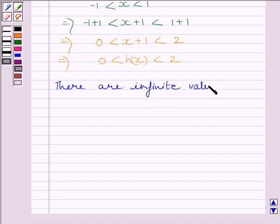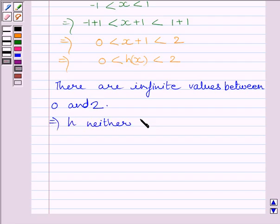Now we know there are infinite values between 0 and 2. So this implies function h neither has a maximum value nor a minimum value.